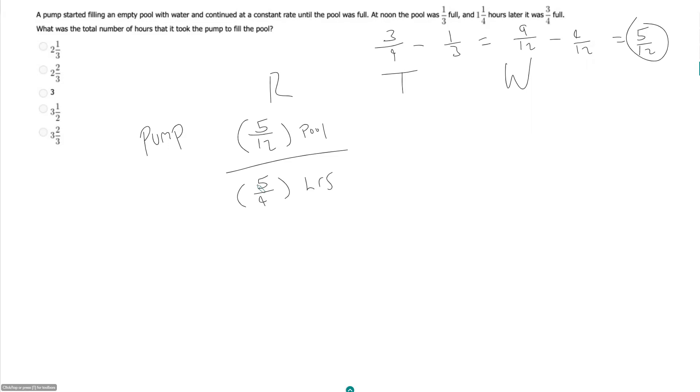So if I simplify this, this will be five over twelve times four over five, which just gets us four over twelve, or one over three.